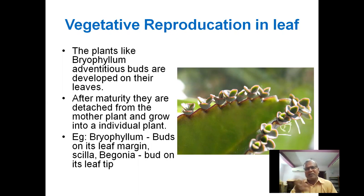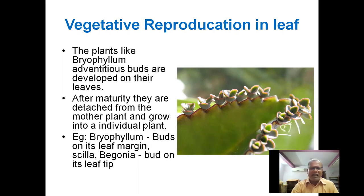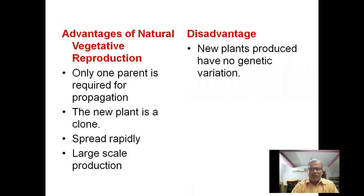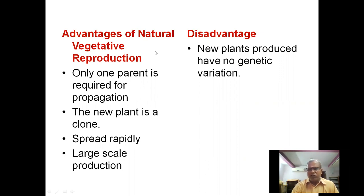Now, Part 2 of reproduction in plants. We look at the advantages of natural vegetative reproduction, as well as the disadvantages. In this method, only one parent is required for propagation.